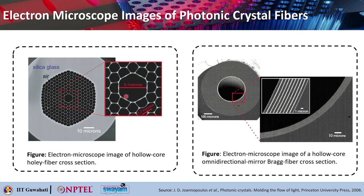These are electron microscope images of photonic crystal fibers. The dark region in one image is the hollow region, showing how a hollow core fiber looks. Another image shows the electron microscope cross section of a Bragg fiber, which is essentially an omnidirectional mirror — also a hollow core but with mirror-like boundaries.